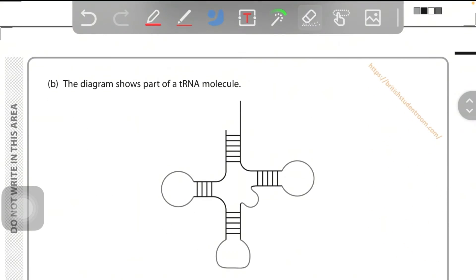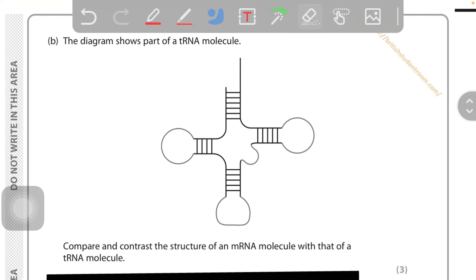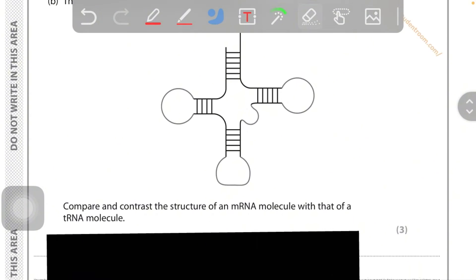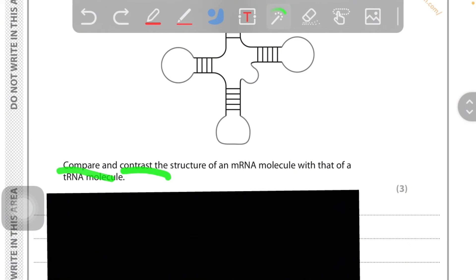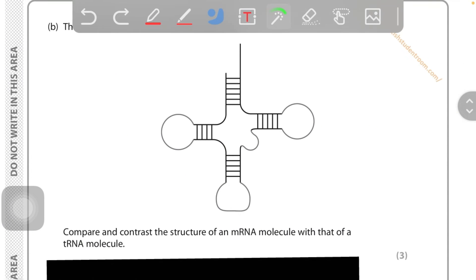Part B: The diagram shows part of a tRNA molecule. Compare and contrast the structure of an mRNA molecule. What does compare and contrast mean? It means you need to give both similarities and dissimilarities of this molecule of tRNA and mRNA. So let's figure out some dissimilarities - that's easier. The shape is not the same, they don't have the same shape. That's one dissimilarity.